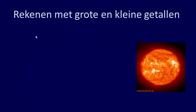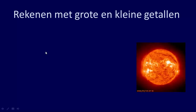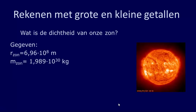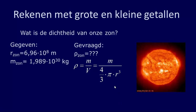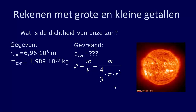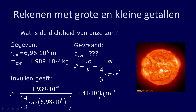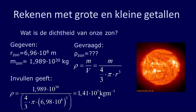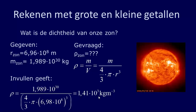Een ander voorbeeld: rekenen met grote en kleine getallen waarbij je gebruik maakt van de wetenschappelijke notatie. Stel de vraag is: wat is de dichtheid van onze zon? Dan hebben we twee gegevens nodig, namelijk de diameter of de straal van onze zon en de massa van onze zon, en die gaan we invullen in de formule. Dichtheid is massa delen door volume, en het volume van een bol is 4/3 pi r tot de macht 3. Het zijn enorm grote getallen, maar je kunt ze relatief makkelijk intikken in je rekenmachine als je gebruik maakt van de wetenschappelijke notatie. Let er wel op: als je deelt door een 10-tot-de-macht getal, vergeet dan niet de haakjes. Sommige rekenmachines doen het automatisch goed, maar bij sommige gaat dat enorm fout. Zorg dat je onder de deelstreep de haakjes niet vergeet op je rekenmachine.